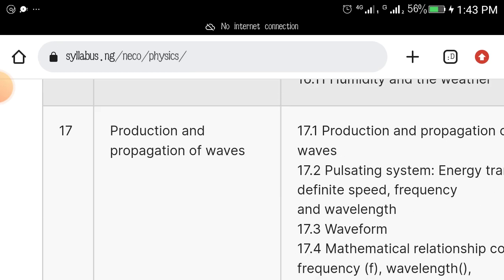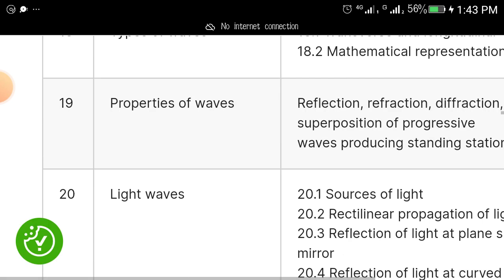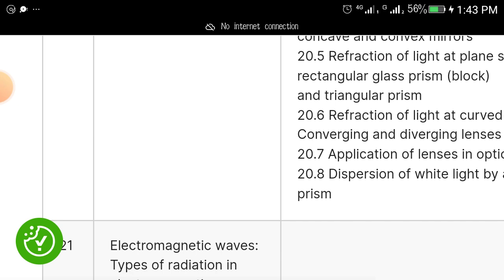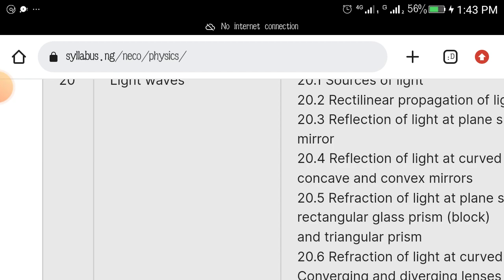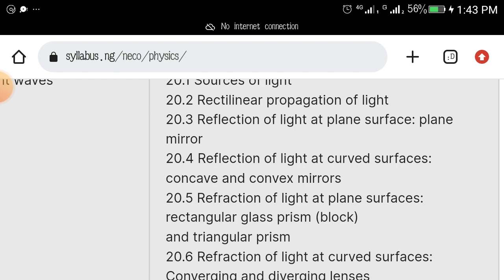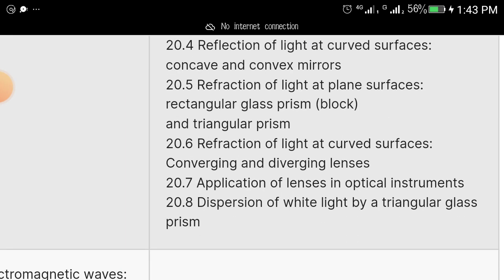17th we have production and propagation of waves. Basically study up things concerning waves. We have types of waves, study up types of wave, properties of waves, light waves. Under light waves we have reflection and refraction - rectilinear propagation of light, plane mirrors.